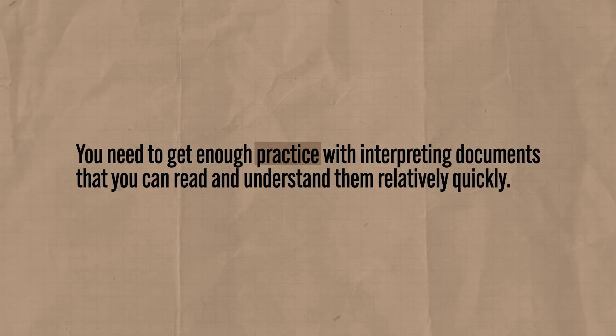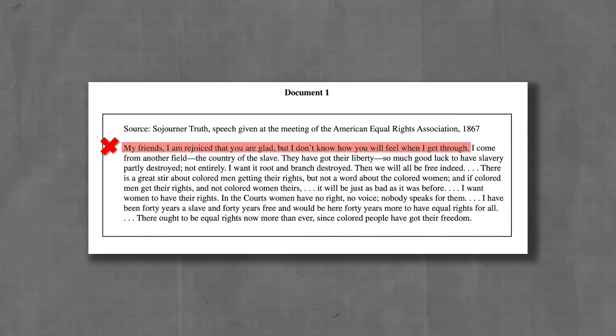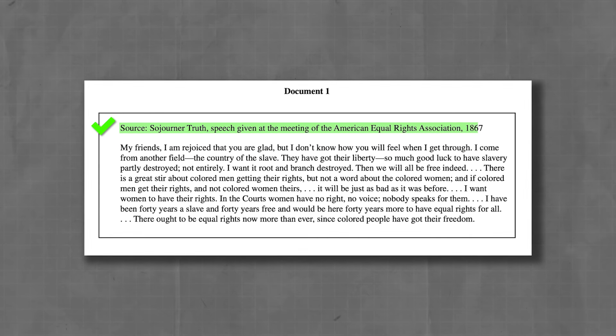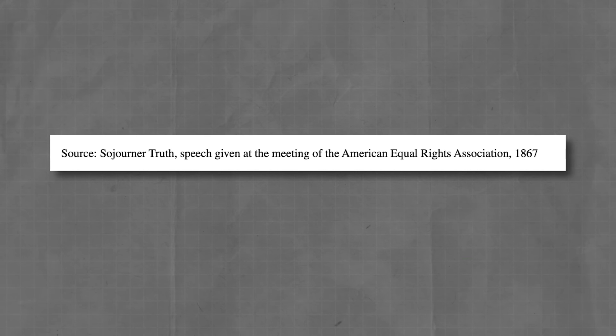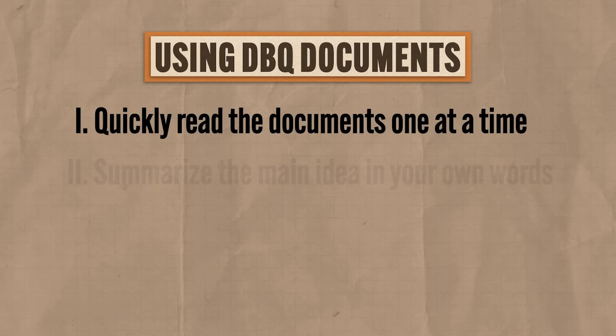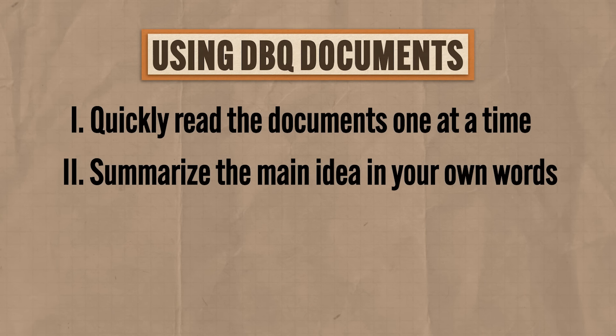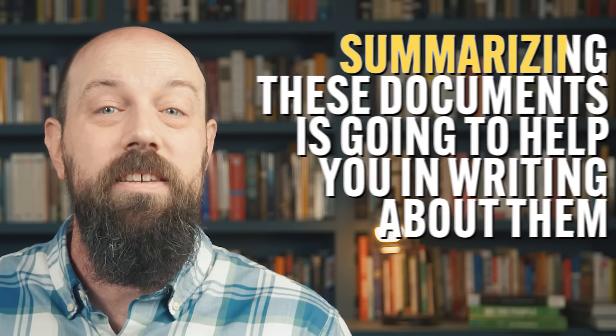I can already hear the weeping and gnashing of teeth — some of the documents are hard to understand and you need more time. But over the course of the school year, you need to get enough practice with interpreting documents that you can read and understand them relatively quickly. The first place you need to start reading is not the first sentence of the document — start at the citation. It will tell you who wrote or produced it, the year it was written, and it might offer critical information you wouldn't otherwise know. The second thing you need to do is summarize the main idea of the document in your own words off to the side. Don't quote it — summarize it.